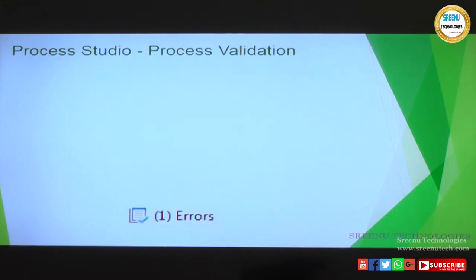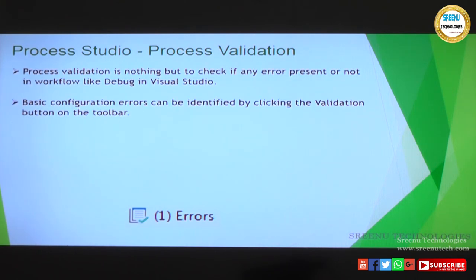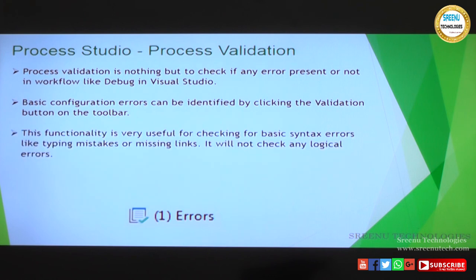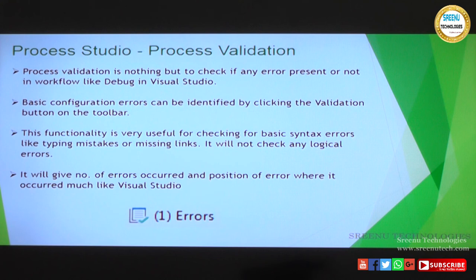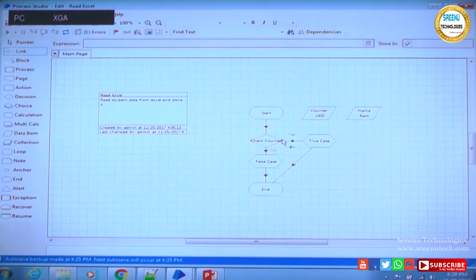Once we have run a process, there may be some errors we configured. You need to understand how to validate your process. There is a function in Process Studio called 'Check Process' which gives a count of errors. Once you click on the count of errors you can point exactly to the stage causing the issue. Let's go back to the tool to understand how to check for process validation and fix immediate errors.